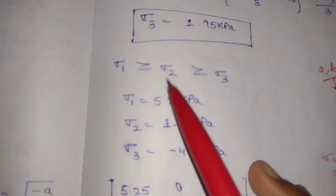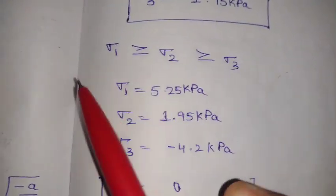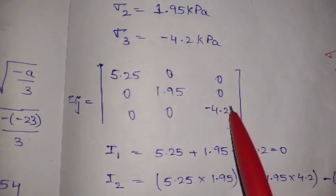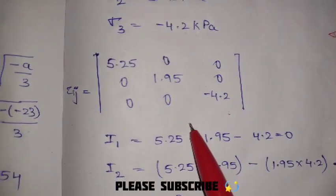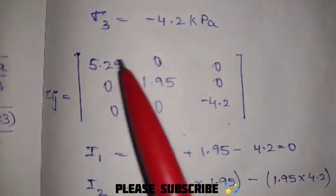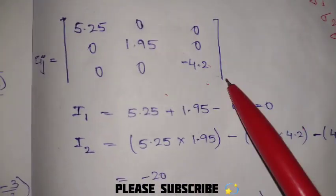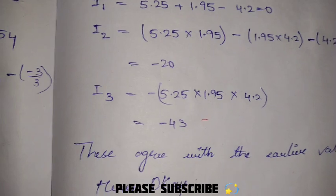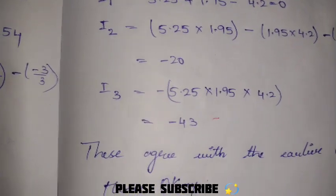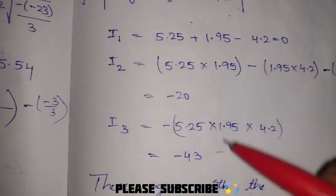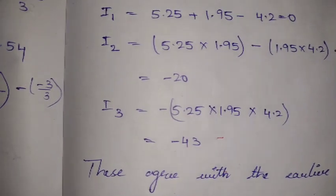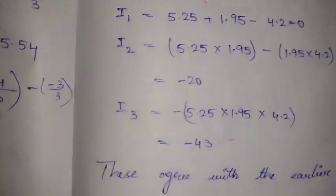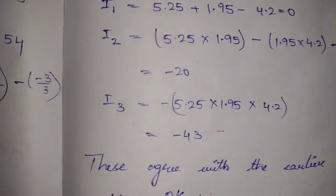Now check for invariance. Substitute sigma_1, sigma_2, sigma_3 as the principal stresses into the matrix - the shear stresses on the principal plane are zero, so only normal stresses remain. Compute I1, I2, I3 from the principal stresses and verify they agree with the earlier values computed from the original stress components. Since all three values match, our equations are confirmed correct.